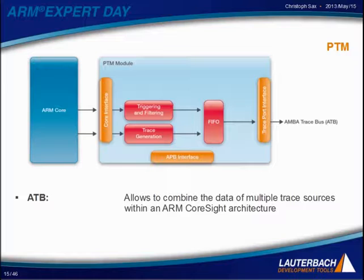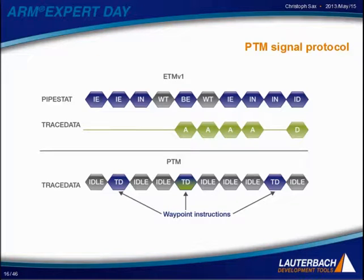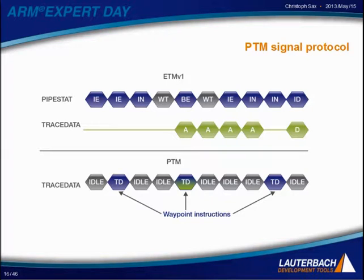The last protocol I want to present is the PTM. The PTM does not support any data tracing. Comparing the signal timing of the PTM and an ETM v1, if the same instruction sequence is executed, the difference is that for ETM v1 each instruction basically generates a distinct trace flag or execution status flag, whereas for the PTM we only generate trace information for so-called waypoint instructions. This causes the problem that for all instructions that are not waypoint instructions, we have no direct trace information. This means the trace tool has to derive the execution status of the instructions between two waypoint instructions on its own.